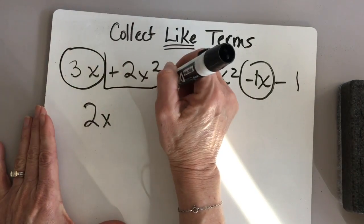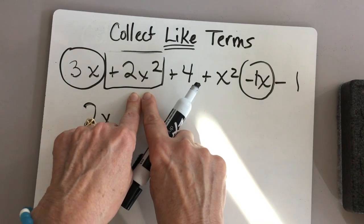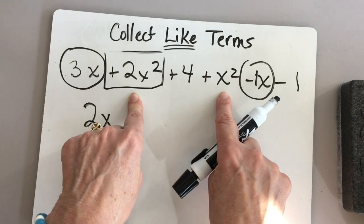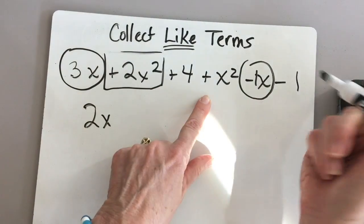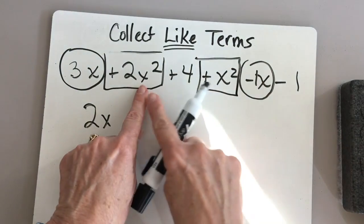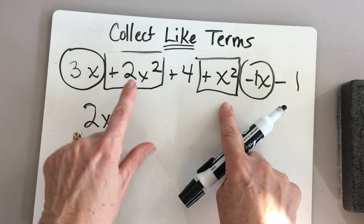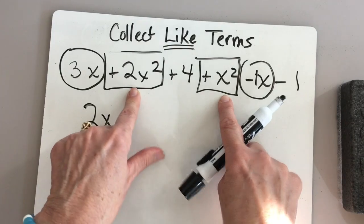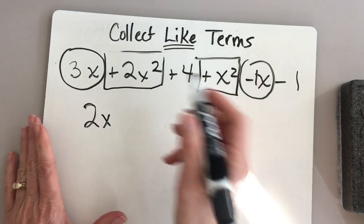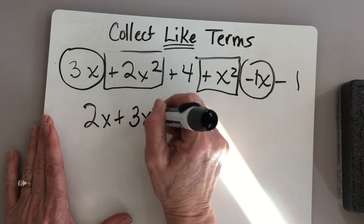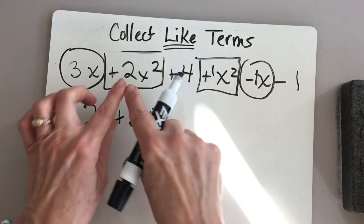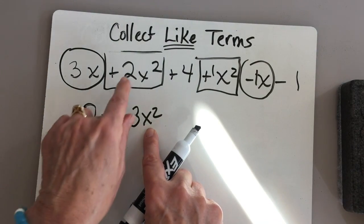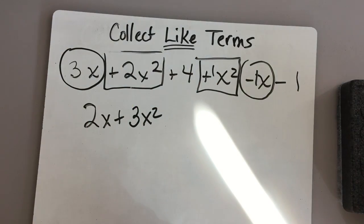Now I'm going to look at this 2x squared. Do we see any like terms for that? It has to be exactly the same thing — and that x squared is exactly the same term. I can combine those: 2x squared plus an x squared — how many x squareds do I have? I have 3, so 3x squared. Remember there's a 1 there: 2 plus 1 equals 3. Notice the variable doesn't change — just the numerical coefficient, the number part in the front.